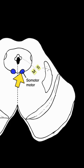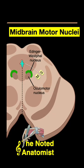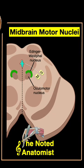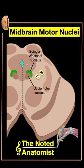Here on the motor side, closer to the midline, is another nucleus. That's a somatic motor — that's the trochlear nucleus. And that, my friends, are the midbrain motor nuclei in a nutshell.